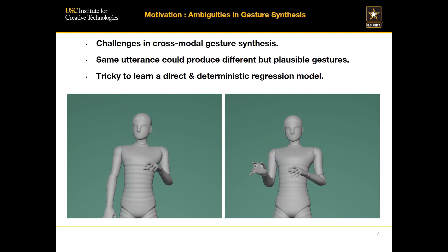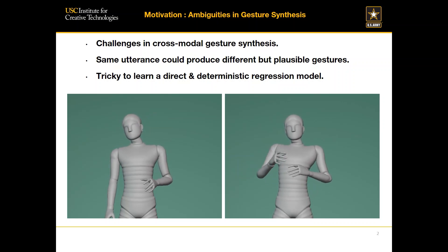One of the motivations for us to develop this method is due to the ambiguity in gesture synthesis. This is the kind of thing we sometimes encounter when trying to learn a gesture synthesis model from a dataset. These are two different gesture motions synthesized from the same utterance using our model, and both look kind of plausible. The same person for the same utterance may use his left hand or his right hand for a very similar utterance.